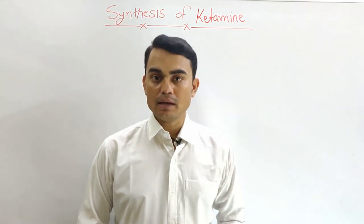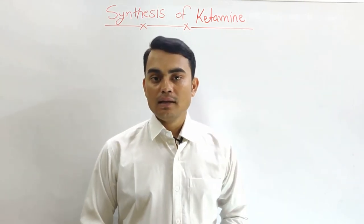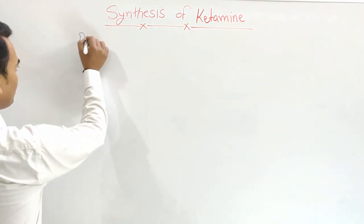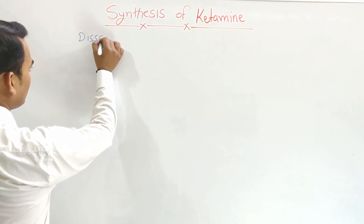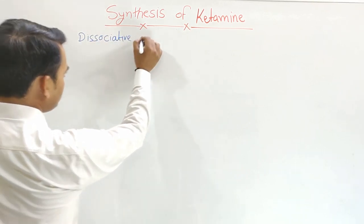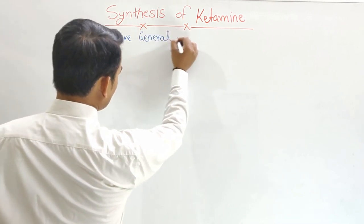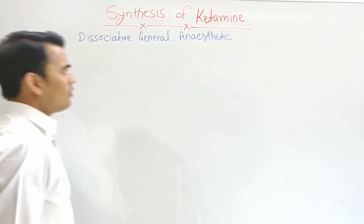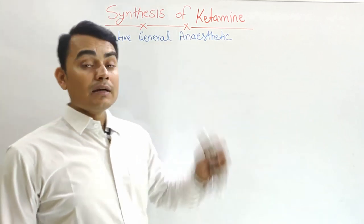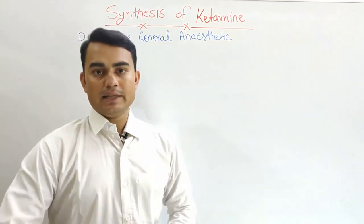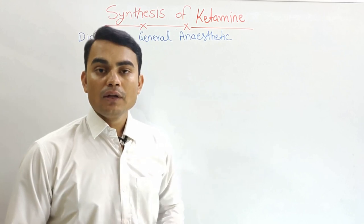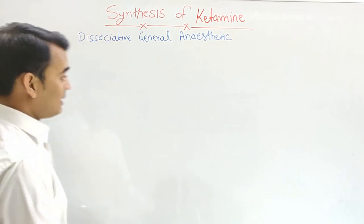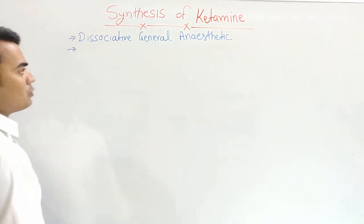What is ketamine? Ketamine is a general anesthetic — basically a dissociative general anesthetic. Ketamine produces unpleasant hallucinations and a strong feeling of dissociation from the environment, which is why it is known as a dissociative general anesthetic.